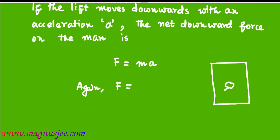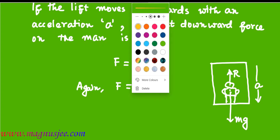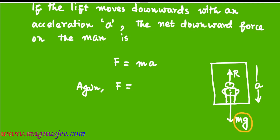A man is standing inside the lift and the lift is moving downwards. Mg is the actual weight of the man, which is acting vertically downwards, and R is the normal reaction on him applied by the floor of the lift, which is acting upwards. Hence, the net downward force will be F equal to Mg minus R.